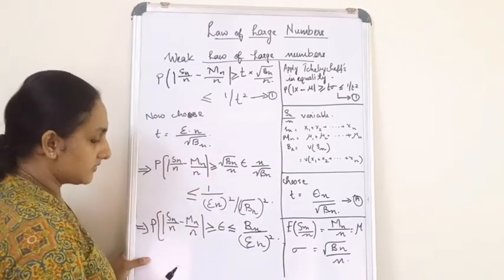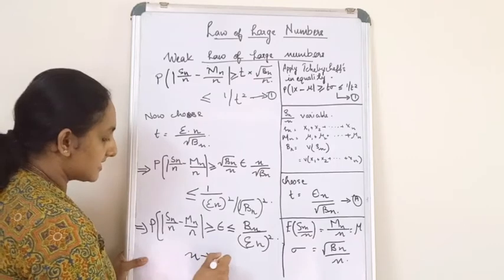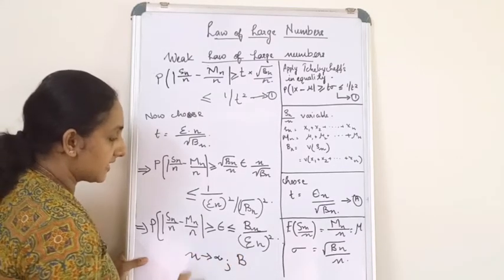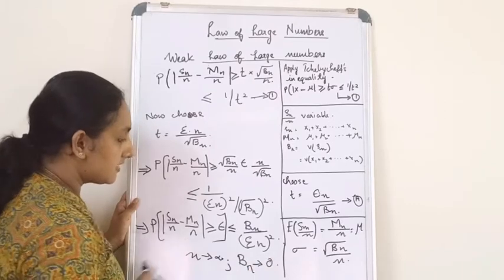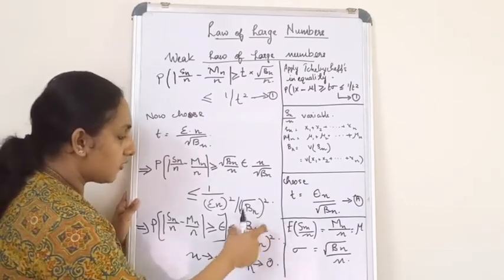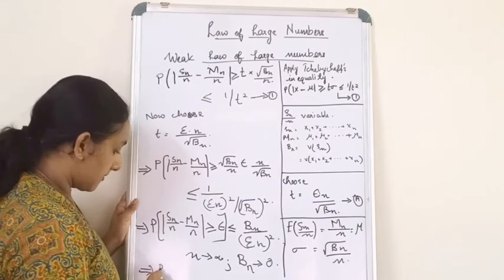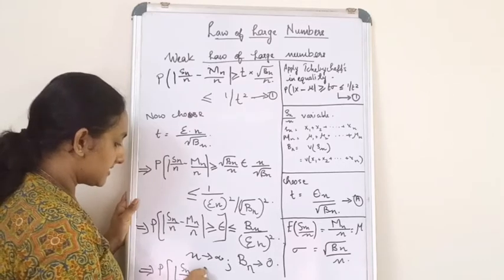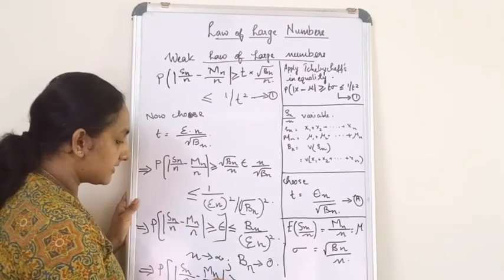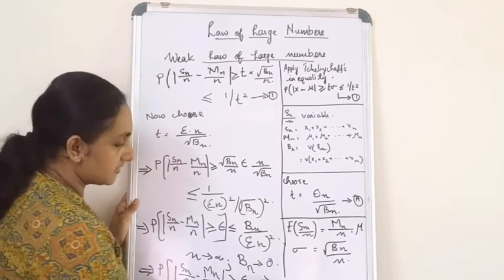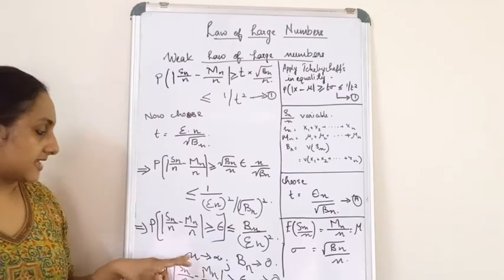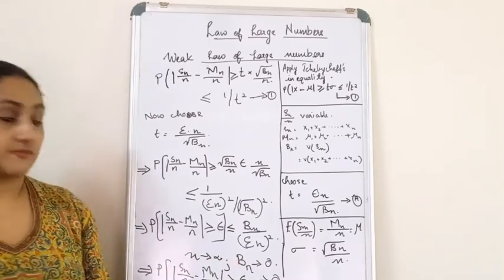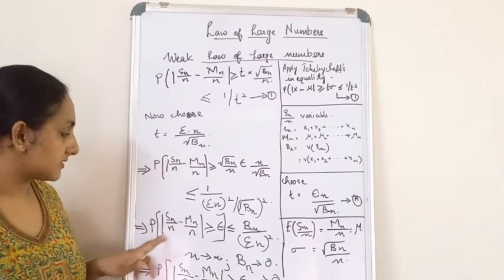Now, as n tends to infinity, from the statement it is clear that Bn/n-squared tends to 0. So the whole term Bn/(epsilon*n)-squared tends to 0. This implies that the probability of |Sn/n - mn/n| >= epsilon also tends to 0. Finally, we have reached our statement and proved that as n tends to infinity, because Bn/n-squared tends to 0, this probability tends to 0, which is exactly what the Weak Law of Large Numbers states.